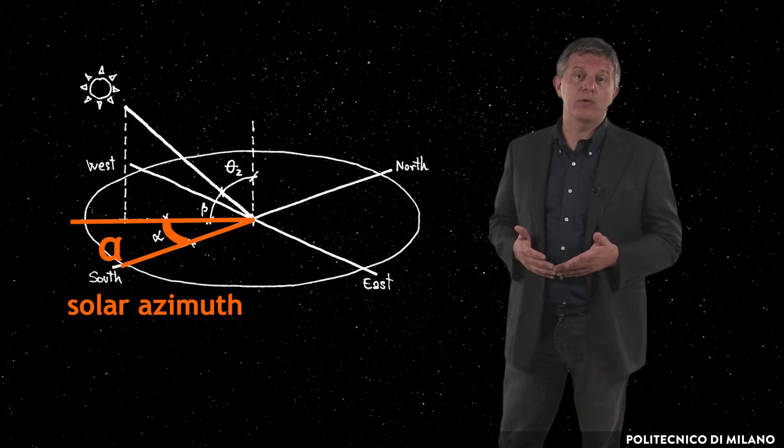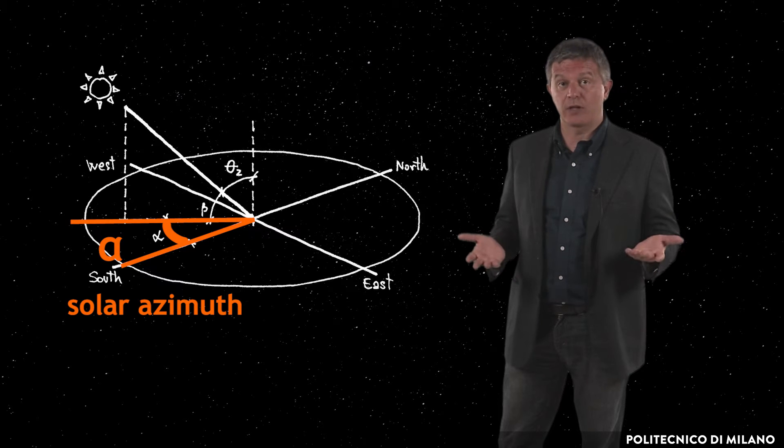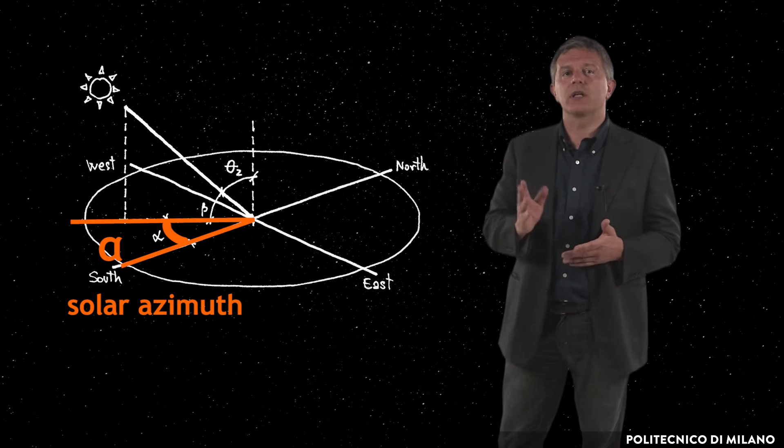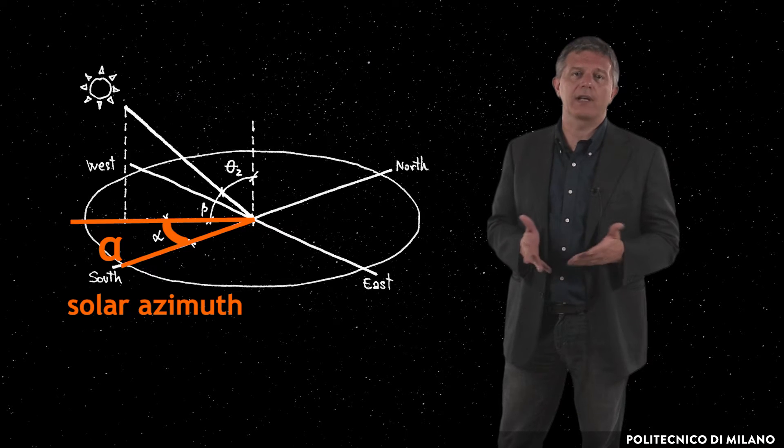Solar azimuth alpha, which is the angle measured on the horizontal plane, from the south pointing coordinate axis to the projection of the same joining line.